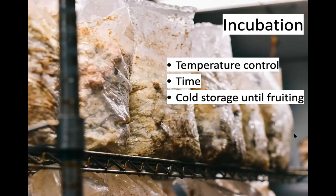Once incubation is complete, bags can be directly moved into the fruiting room or placed in cold storage until you're ready to fruit them. You could build up a surplus of blocks, put them in a walk-in cooler, and leave them there for three or four weeks until you need them. After about four weeks they will just start fruiting on their own, so one month maximum in cold storage.